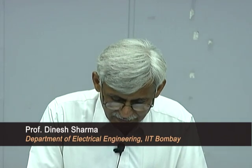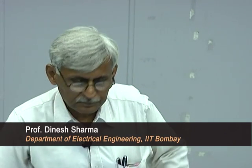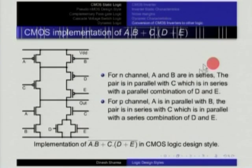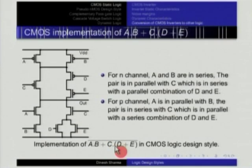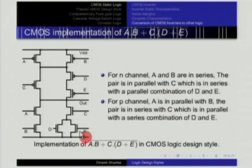Let us look at a slightly more complicated logic using the document. Consider implementing the expression A·B + C·(D+E), all barred. Notice we need a bar on top. Recalling the rule: for every dot, N in series and P in parallel; for every plus, N in parallel and P in series. Let us scan this expression.